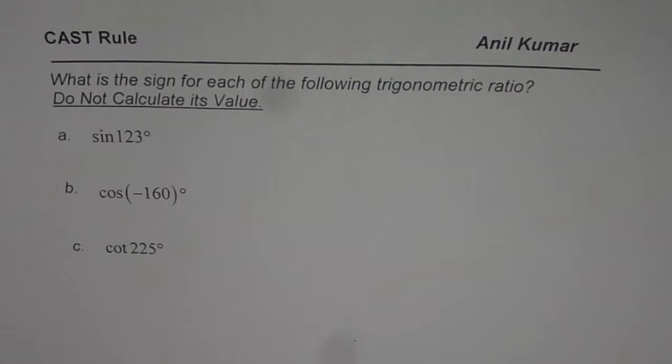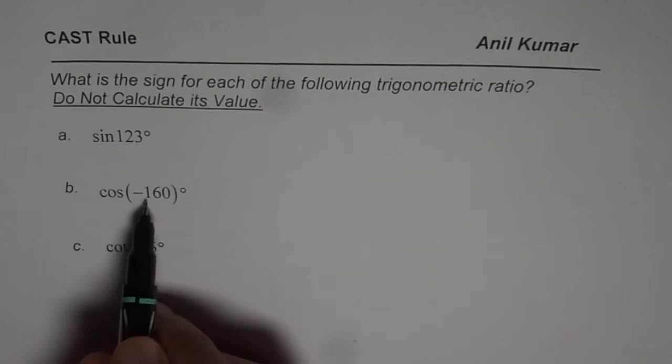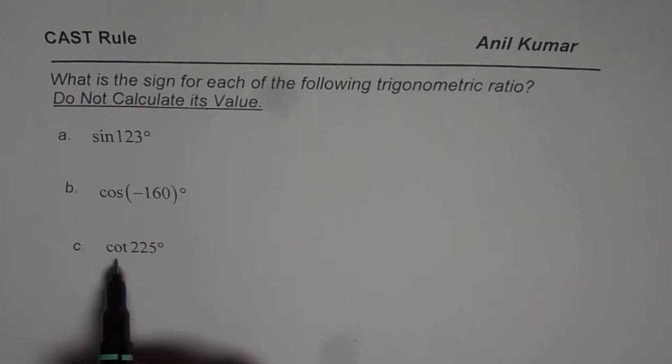The first one is sin 123°, then we have cosine of minus 160 degrees and cotangent of 225 degrees. I would like you to pause the video, copy the question, answer, and then look into my suggestions.